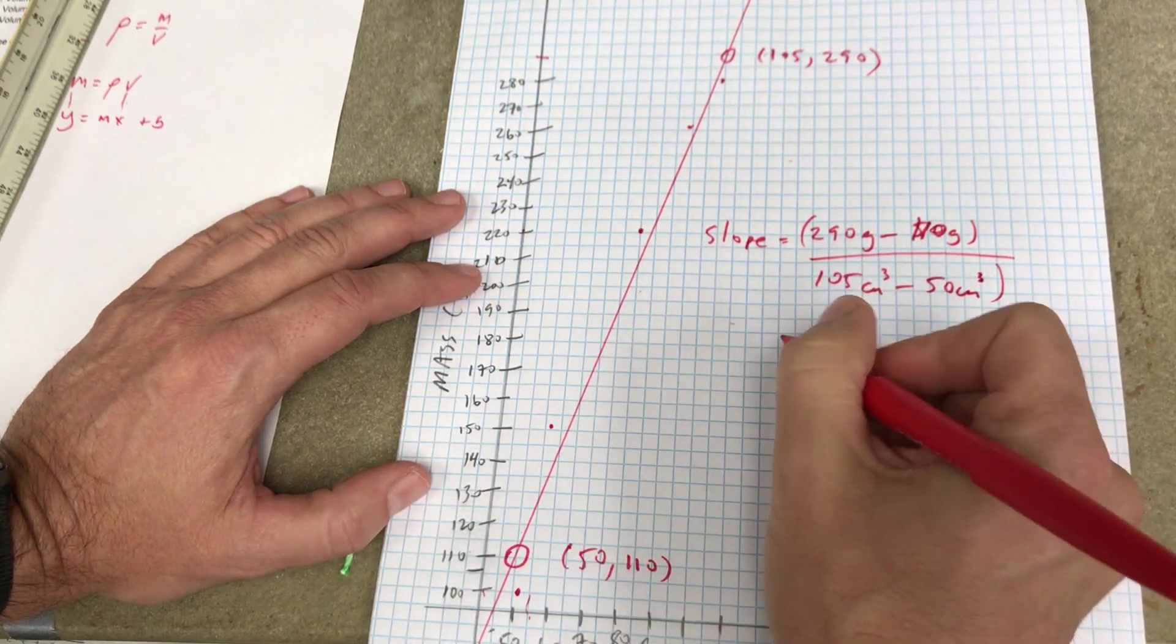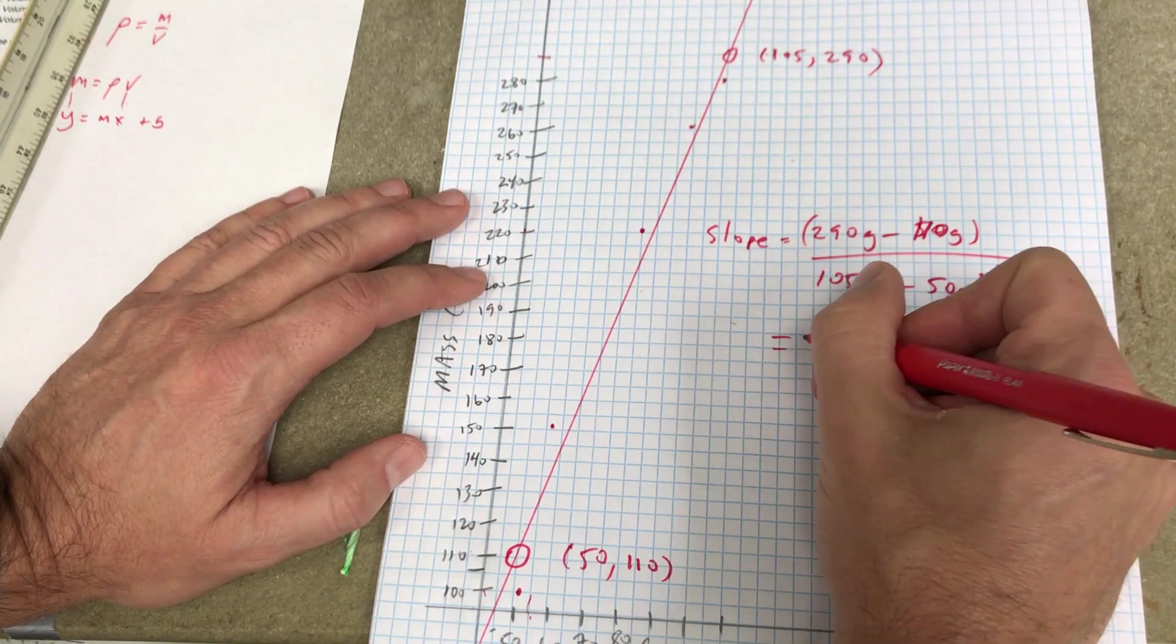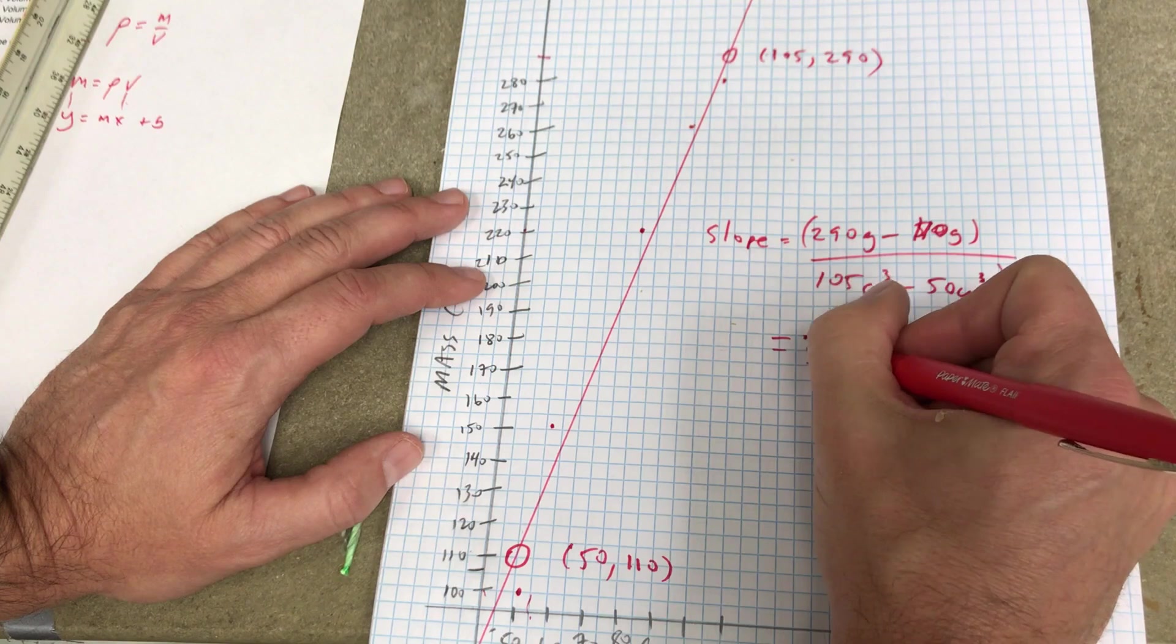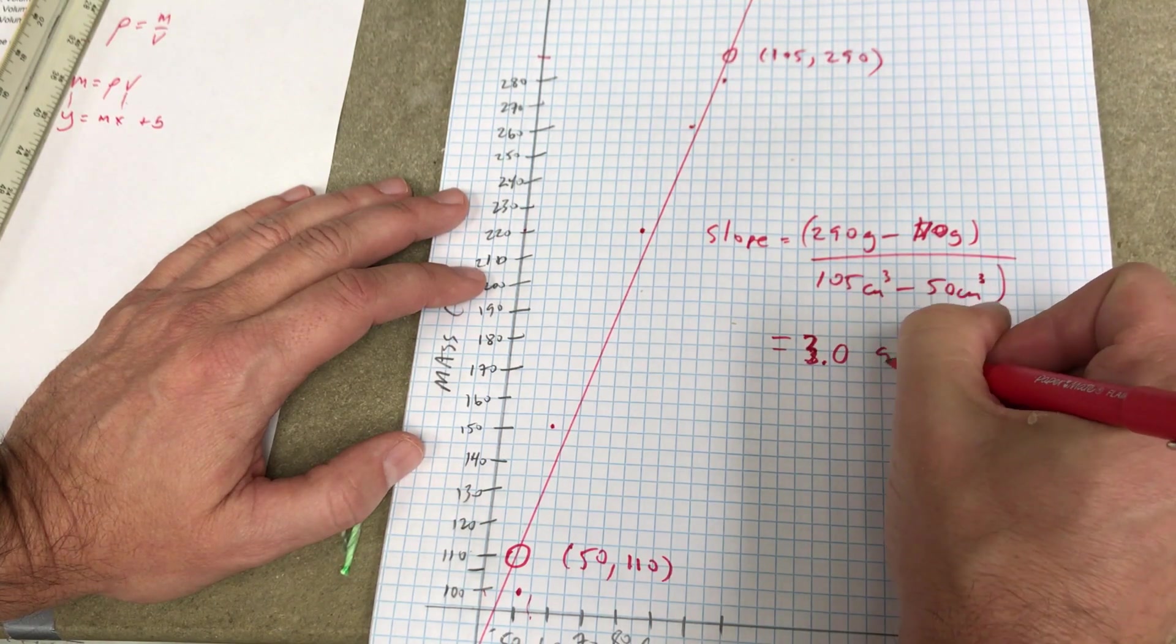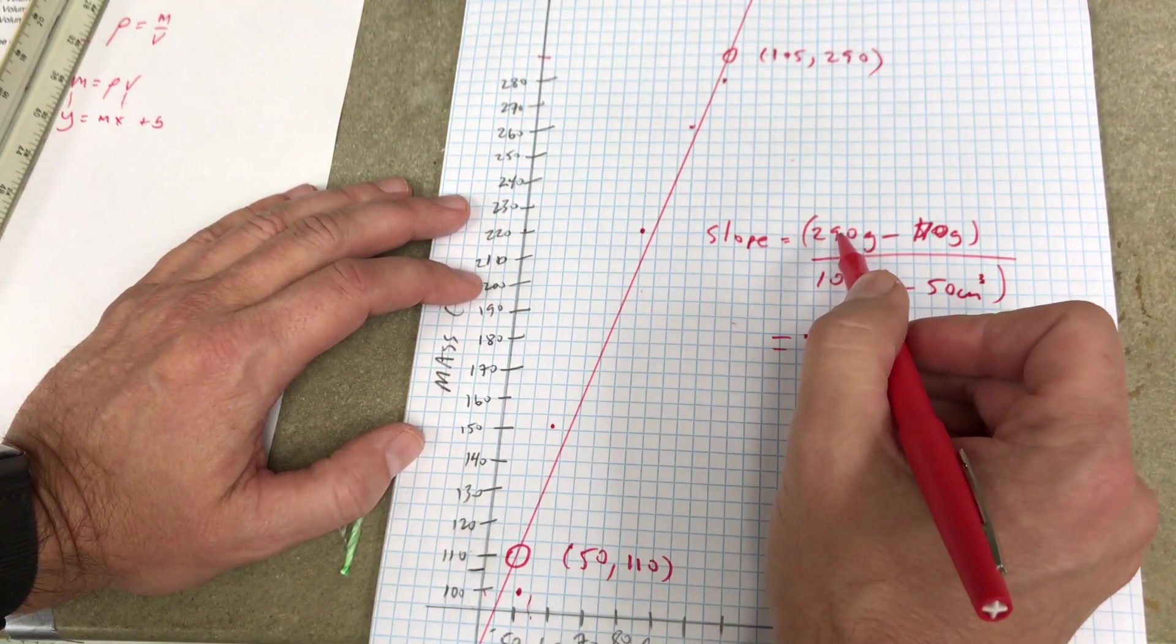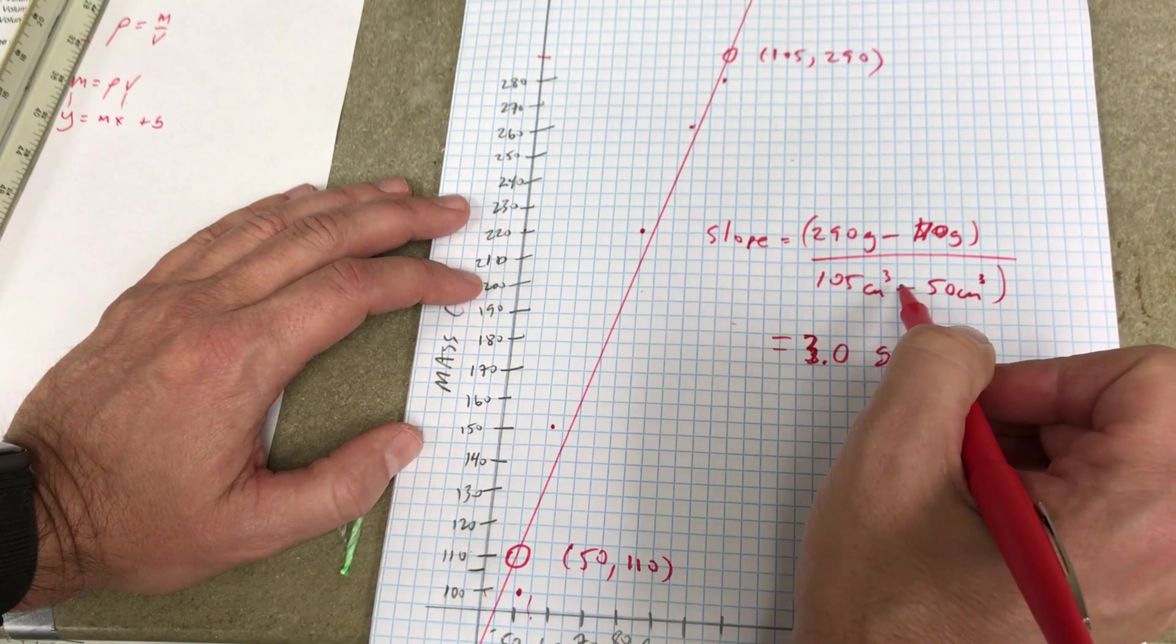And I don't have my calculator with me. Actually, my phone is being used right now. So I think this is somewhere around 2 or 3 point something. Let's say 3.0 grams per cubic centimeters. And that's the slope. Okay, let's see, let's just check.